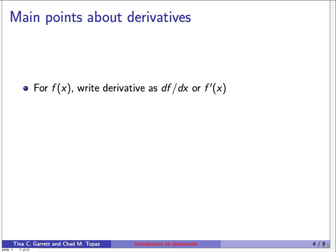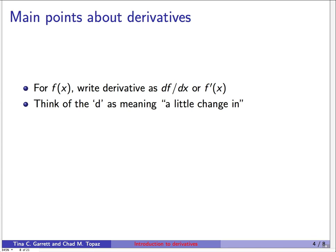Here are some general points about derivatives, starting with notation. For f of x, there are different ways to write the derivative: df/dx, or f prime of x. These mean the same thing and we'll use them interchangeably. You should think of the 'd' as meaning 'a little change in.' So df/dx means a little change in x produces a little change in f, and we take the ratio of those — that's the derivative.